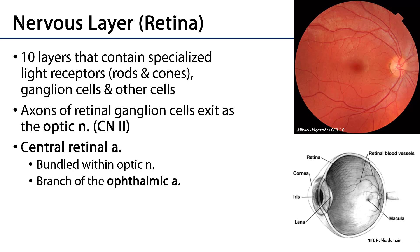The innermost layer, or nervous layer, is the retina. This layer is a varied layer with approximately 10 layers of very specialized cells, including specialized sensory receptors for light. These include both rods and cones, as well as retinal ganglion cells and various other cells. It is those retinal ganglion cells that exit the eye as the optic nerve. Bundled within the optic nerve, within its dural sheath, is a branch of the ophthalmic artery known as the central retinal artery. In this fundoscope image we can actually see branches of the central retinal artery spread out amongst the retina.